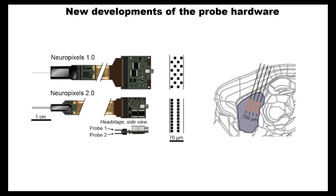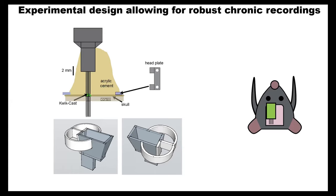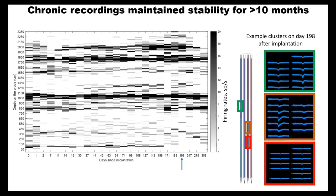In order to get recordings that would be as stable as possible, we actually cemented the probes. This means that we cannot extract them after the recording and reuse them — we essentially lose a probe — but we did it on purpose and it gave us very stable results. We put cement and attached the probe to the skull of the mouse, and also put a 3D-printed protective part around it to protect from the mouse bumping into the walls of the cage. We implanted these probes in the left visual cortex.